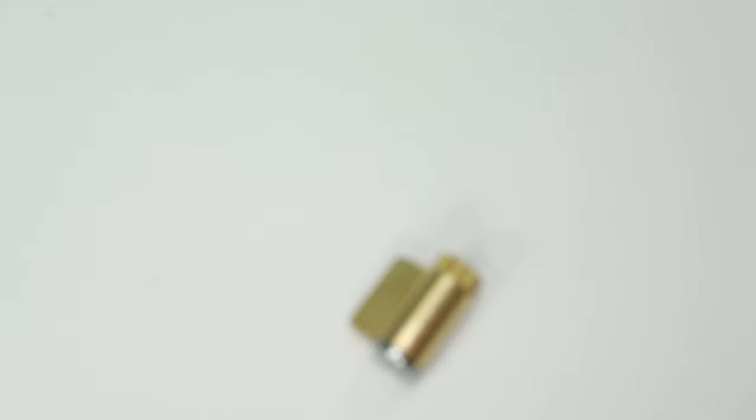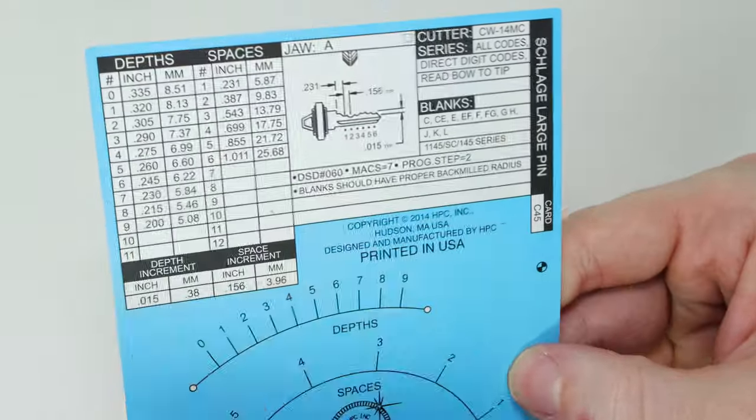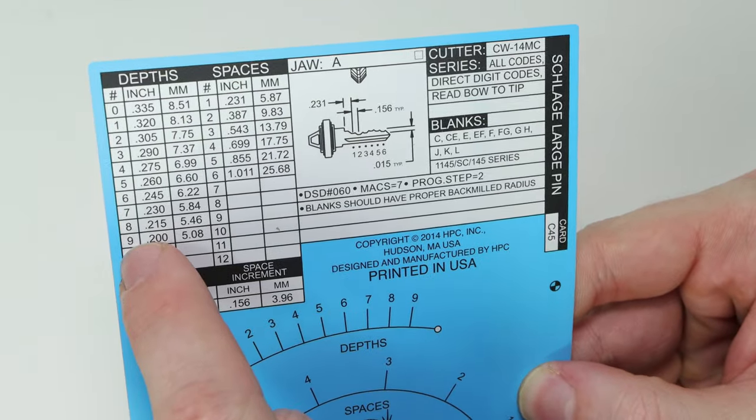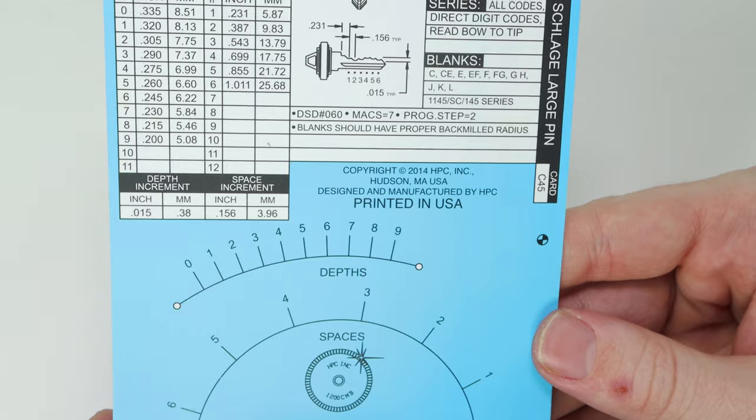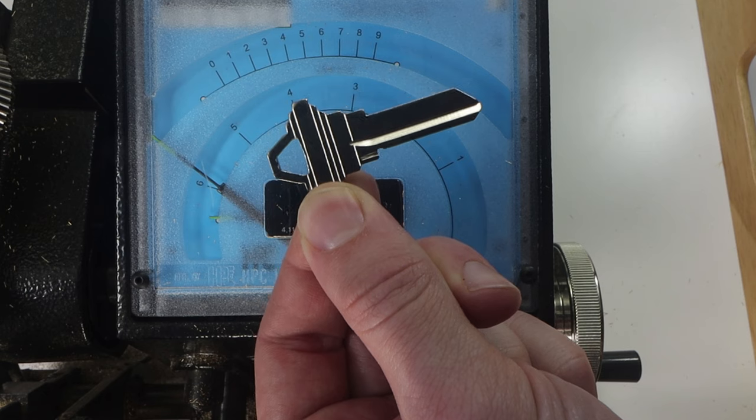So what I'm going to do right now is I'm going to get my code cutter ready. I'm going to use my HPC blitz machine. We're going to cut all the way down to the 9s going all the way across and we're going to make a really quick bump key. Alright, so let's get started.